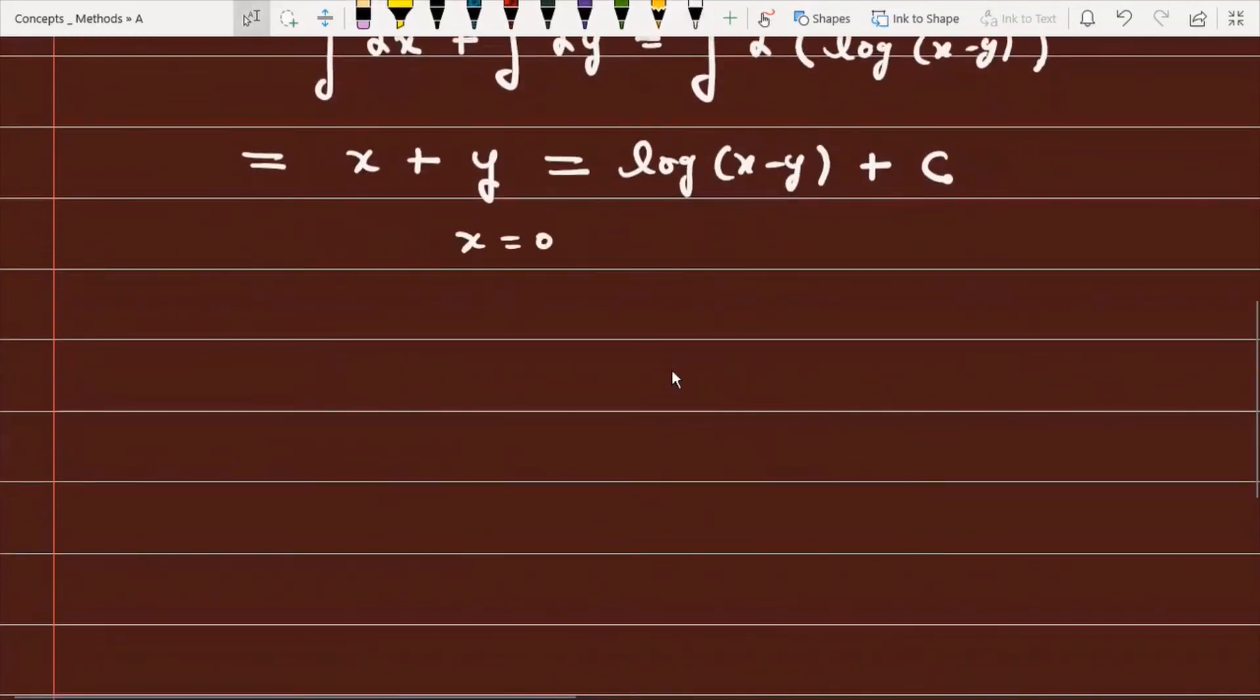If x = 0, then y = -1. We can write 0 - 1 = log(0 - (-1)) + C.